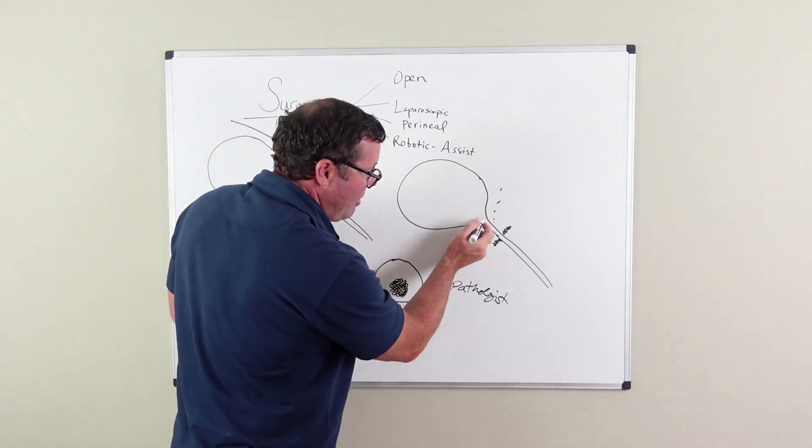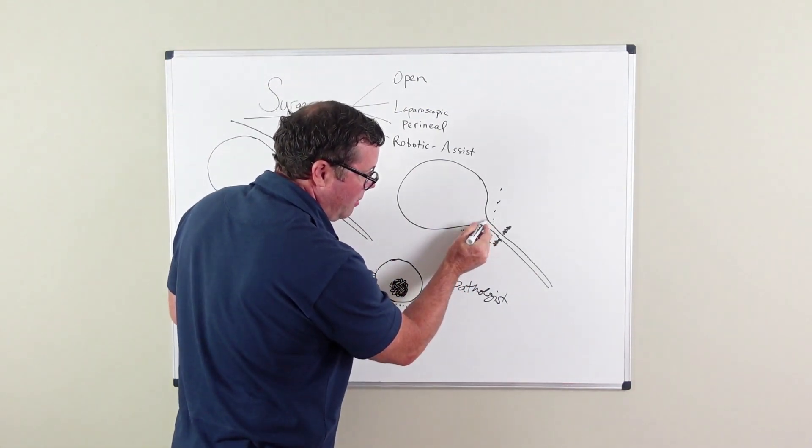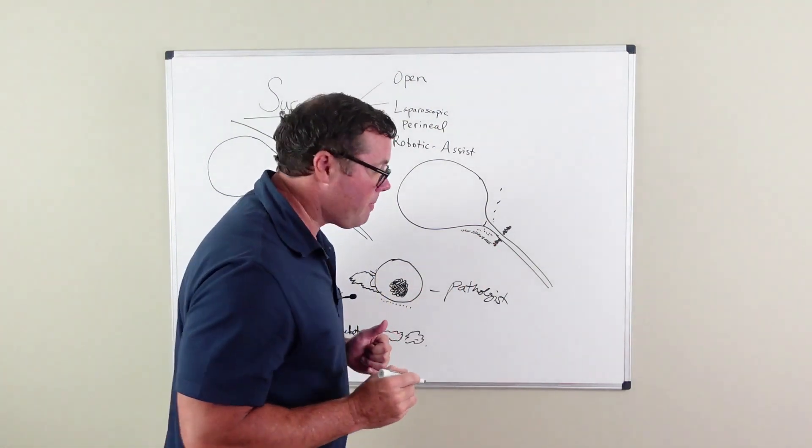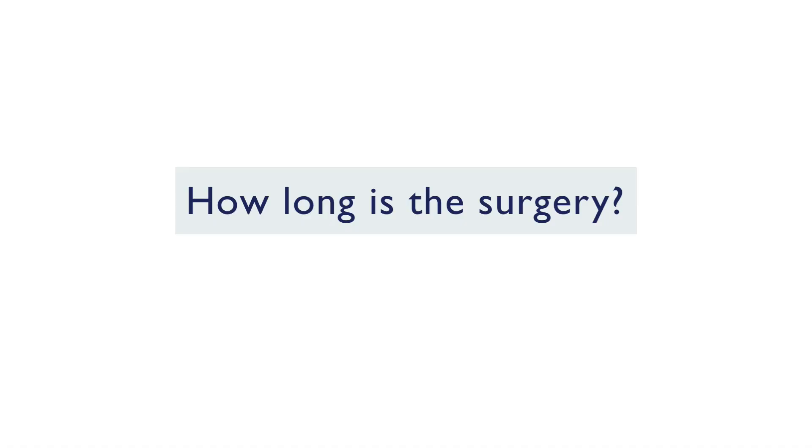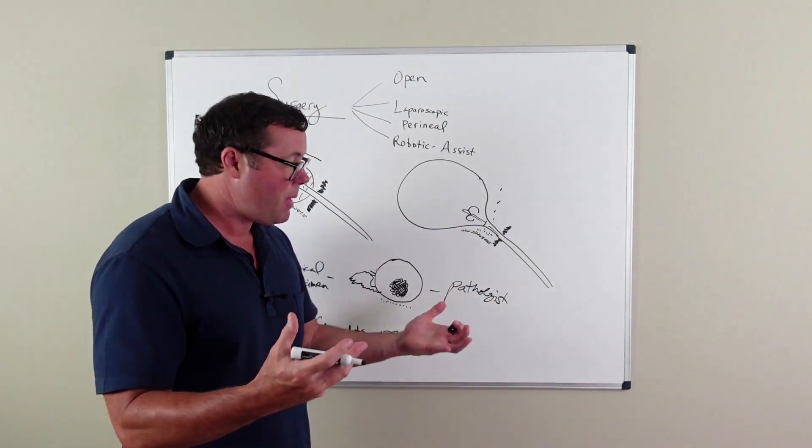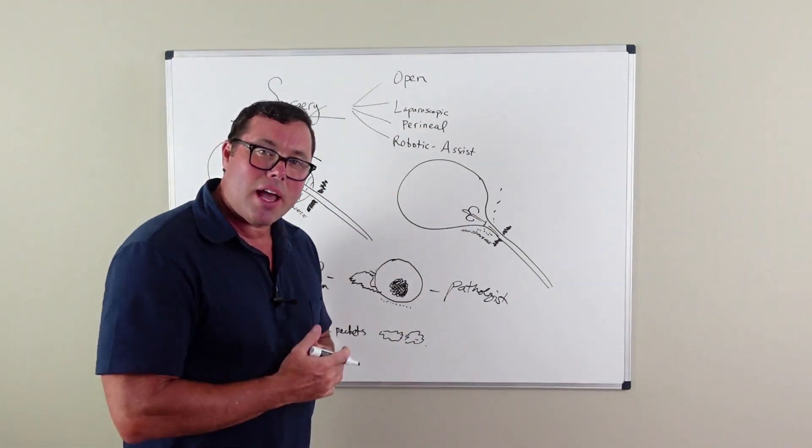And then the bladder neck is put back together with a few sutures back to this urethra. The procedure itself will take anywhere from 90 minutes to five hours, depending on various factors.